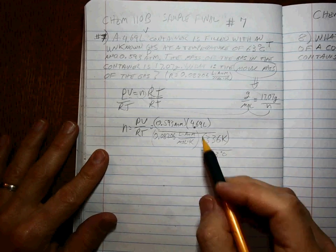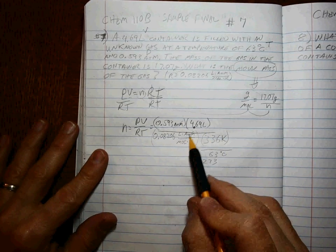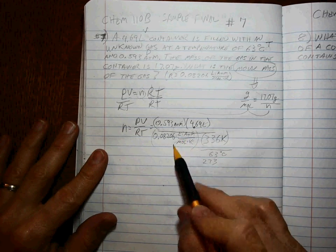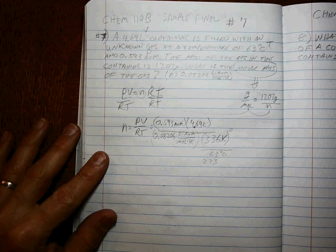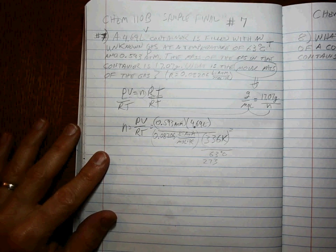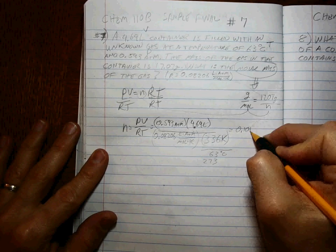And you're not going to get sig figs right either. So, atmospheres cancel, liters cancel, Kelvin cancels. We're left with moles. How many moles is that?